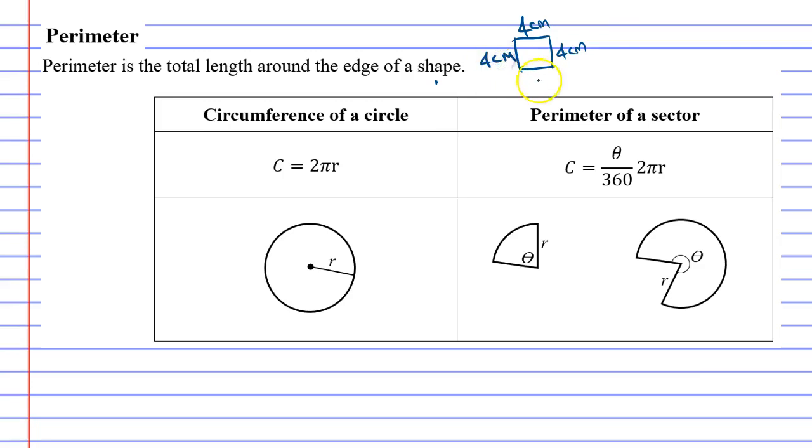If I want to find the perimeter of the square, all I would have to do is add them all up: four plus four plus four plus four. That tells me I've got a perimeter of 16 centimeters around the edge of that shape.